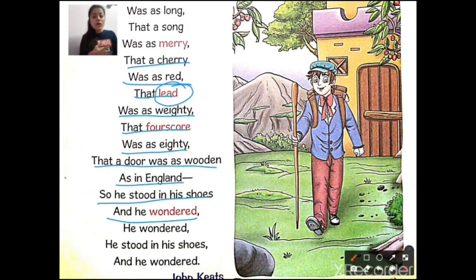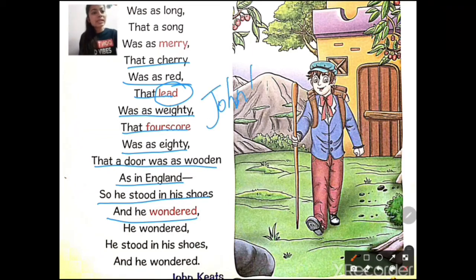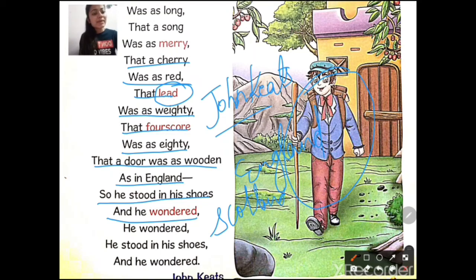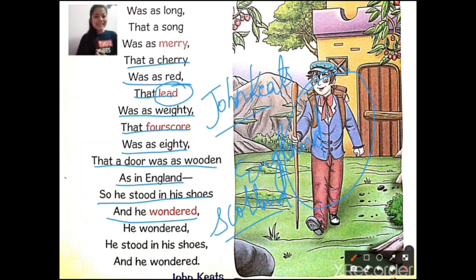So here the poem makes a comparison — Scotland mein jaisi cheezein hain, woh England se similar hain (the things in Scotland are similar to England). This was a short poem written by John Keats, about a naughty boy who runs away from England to Scotland to see how the people there live, what their lifestyle is like, what their homes are like, what fruits they have. But he found everything the same. So the chapter is completed — hopefully you found it helpful. Have a good day, students.